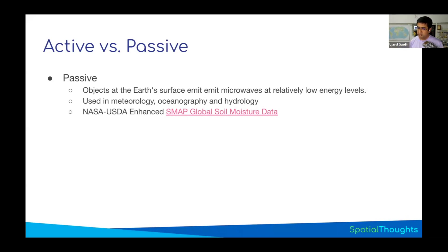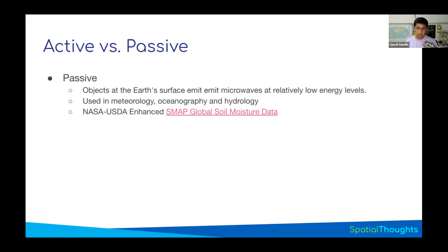Passive sensors are also used for detecting precipitation from clouds, making them useful in meteorology and in agriculture for soil moisture monitoring. They don't have any energy source on the satellite — they're simply looking at the background radiation being emitted.